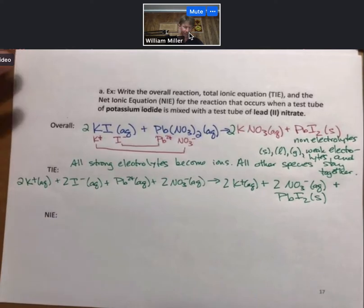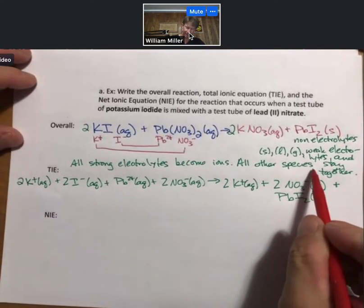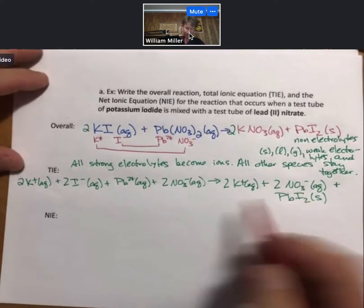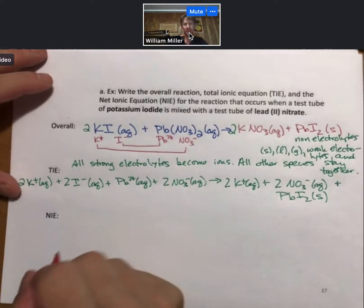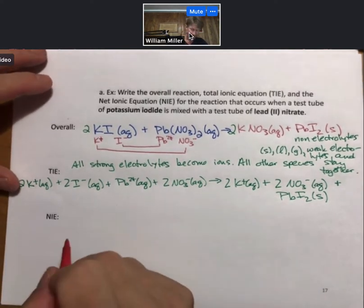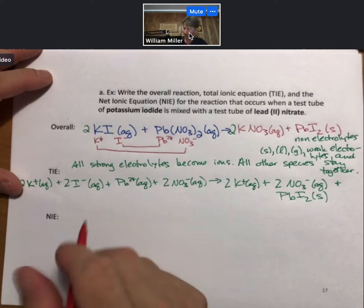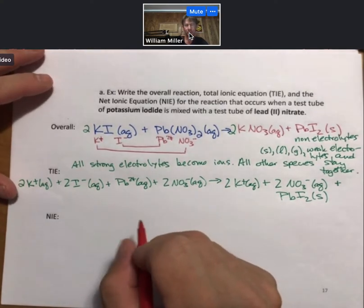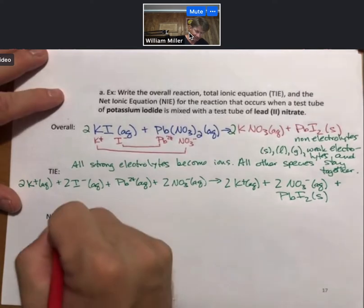Now the NIE, the net ionic equation. So a couple things we want to say about that. First, in the net ionic equation, you cancel all spectator ions.